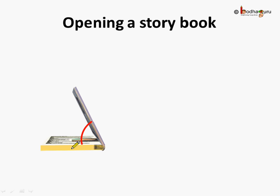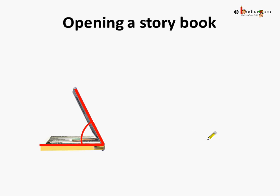Now let us open a storybook. When we open the book, we are turning the cover page. As we turn the book open, the turn between the cover page and the book increases. And if we look from this view, the cover page looks like a straight line and the first page after the cover page looks like a straight line, and these two straight lines meet at a point.